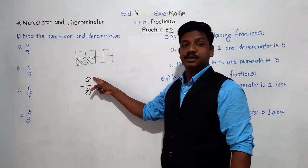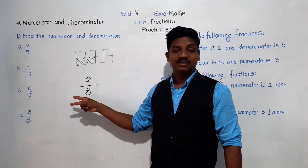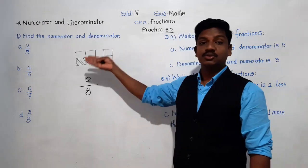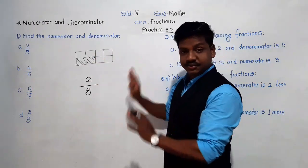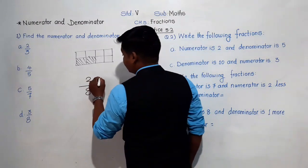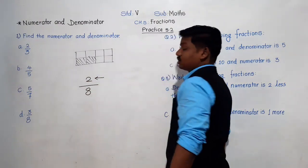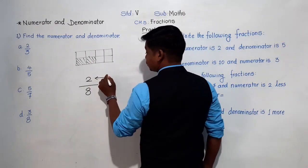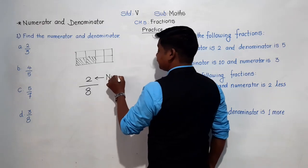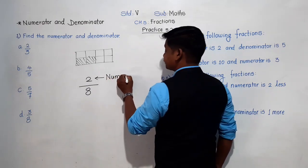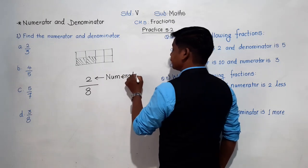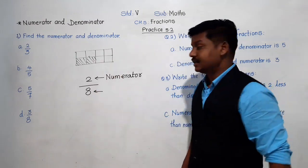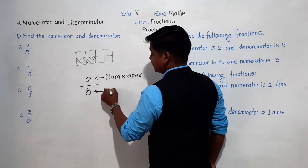Today we are going to give names to the number above the bar and the number below the bar. From today onwards we are not going to say 'number above the bar' or 'number below the bar.' The name of the number above the bar — which represents the shaded parts or unshaded parts — is called the numerator.